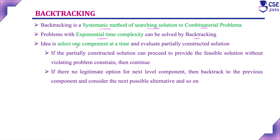The idea of backtracking is to select one component at a time. Initially, it starts with the initial state or initial solution, selecting one component at a time. This is considered as a partially constructed solution. With this partially constructed solution, if it is able to provide a feasible solution without violating the problem constraints, continue.